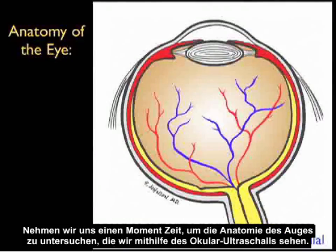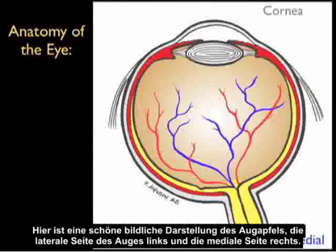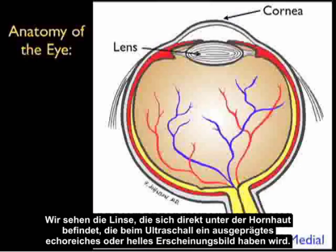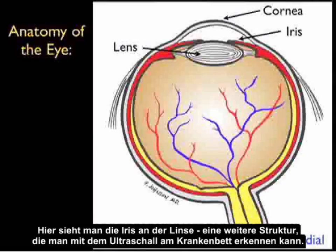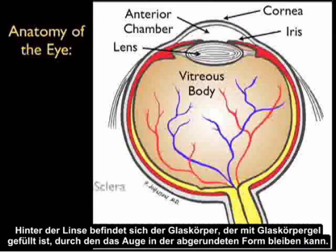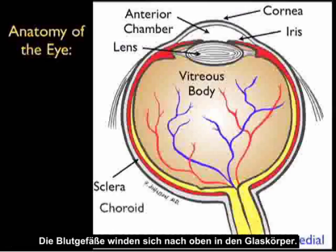Now let's review the anatomy of the eye as seen using bedside ocular ultrasound. Here's a pictorial of the eyeball, with the lateral aspect to the left and medial to the right. Starting anteriorly, we have the cornea at the top, and directly below it the lens, which has a distinct hyperechoic or bright appearance on ultrasound. The iris attaches to the lens, and the region anterior to the iris is known as the anterior chamber — where we can also image pathology such as hyphemas. Behind the lens lives the vitreous body, filled with vitreous gel, which keeps the eyeball in its rounded configuration, with blood vessels arching up into it.